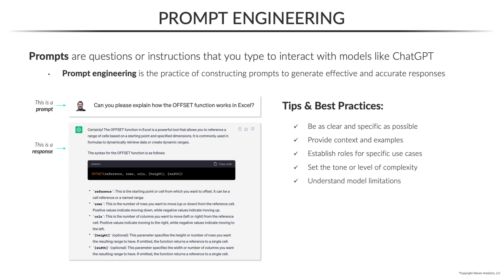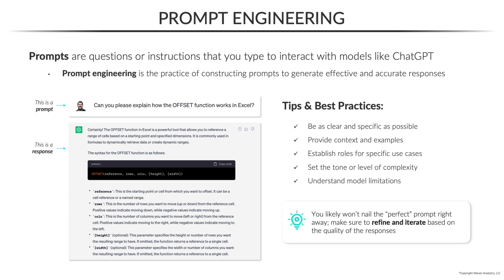And last but not least, understand model limitations. There are some things that these tools may not be able to help with, or information that the models haven't been trained on, like recent current events. You likely won't nail the perfect prompt right away, but the beauty of these tools is that because they are conversational and remember the context of previous prompts, you can very easily refine and iterate based on the quality of responses you're getting back.